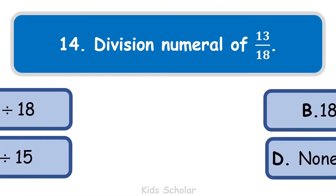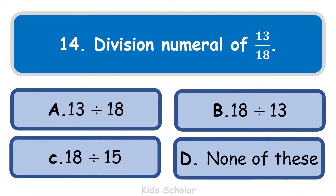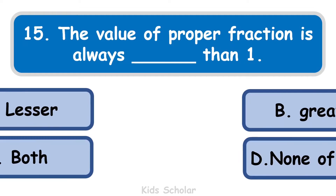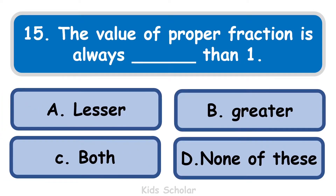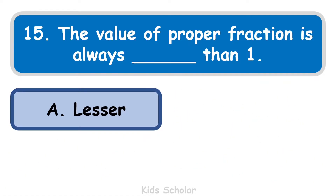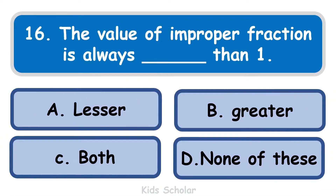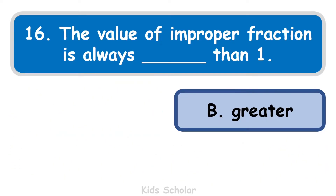Next question is: what is the division numeral of 13 by 18? The correct answer is option A, that is 13 divided by 18. Next question: the value of a proper fraction is always dash than 1. It is always less than 1.